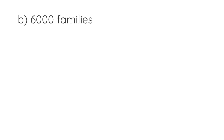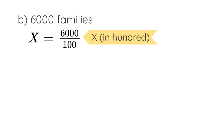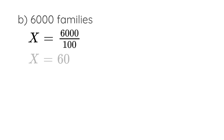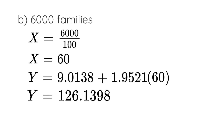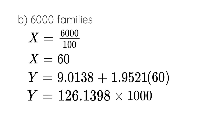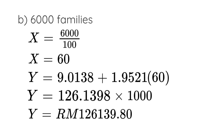For the second question, pay attention to the scale or unit of x and y. The independent variable, number of families, is measured in hundreds, so we divide 6000 by 100 to get x equals 60. Substituting 60 into the regression line, y equals 126.1398. Since the unit for y is in thousand ringgit, we multiply by 1000, giving an annual expenditure of RM 126,139.80.